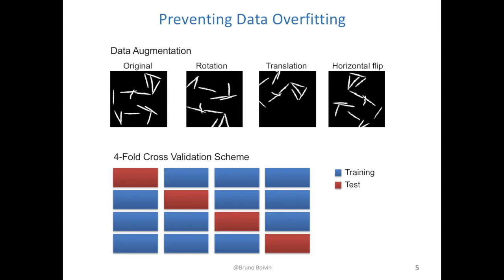Then, to reduce data biases that might arise from the random data split between training and test data, four-fold cross-validation was utilized. The model was effectively trained on four distinct portions of the data and also tested on four distinct portions. The performance of the model was then evaluated as the average over these four folds.